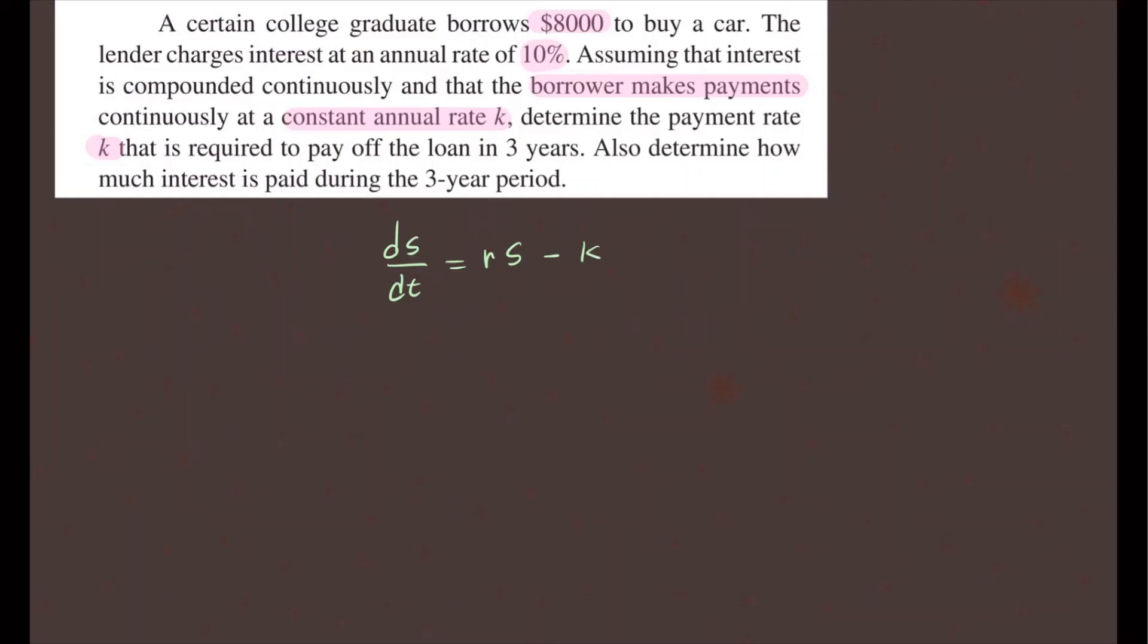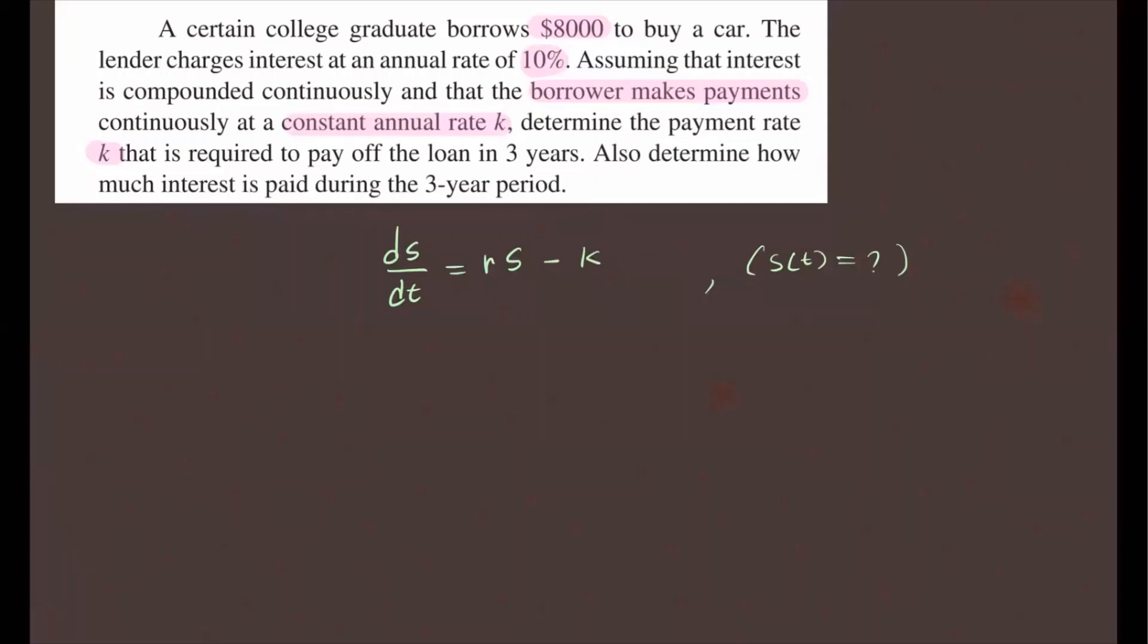Now, if you were to solve this differential equation to find S of T, you're going to have to go through some solving. Let's use this model to figure out what our function S of T is, which will be the amount after any time T in years. We're going to solve this differential equation. We will subtract R times S on both sides since this is a linear equation, so dS/dt minus R times S equals negative K.